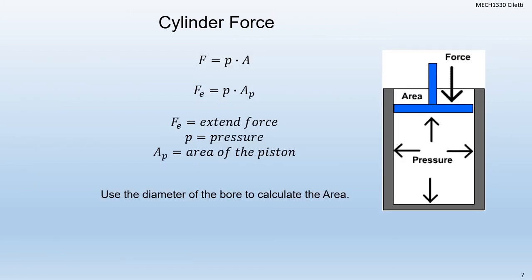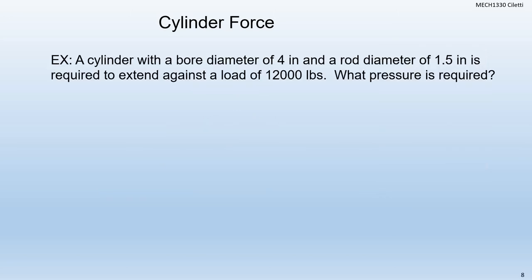No new equation here — pressure is force over area, or force equals pressure times area. So we have our extending force, which is pressure times area. When we do this, we're going to use the area of the bore diameter — that's the opening the piston is sitting in. So let's do a simple calculation. We have a cylinder with a bore diameter of 4 inches and a rod diameter of 1.5 inches required to extend against a load of 12,000 pounds. What pressure is required?